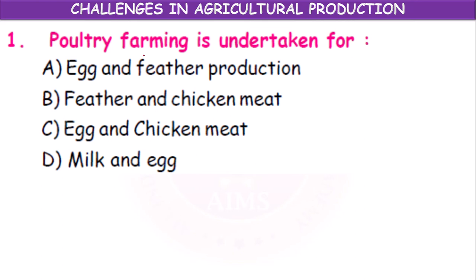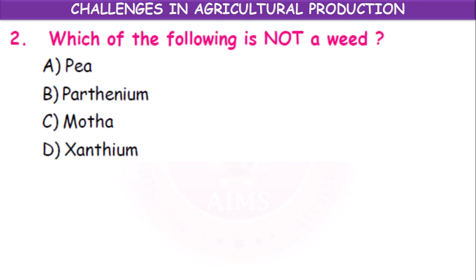Question 1: Poultry farming is undertaken for — (A) egg and feather production, (B) feather and chicken production, (C) egg and chicken meat, (D) milk and egg. The answer is egg and chicken meat. The birds grown especially for eggs are called layers, and for meat they are called broilers.